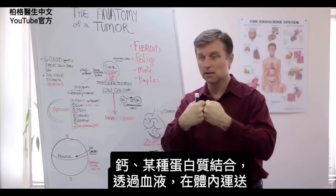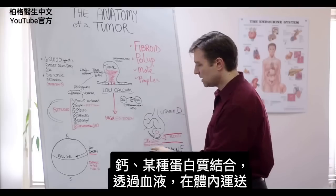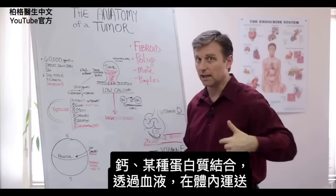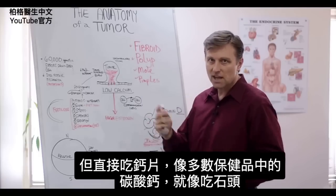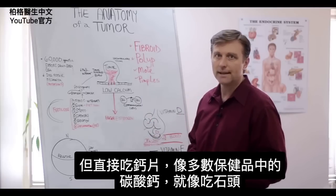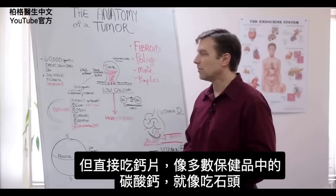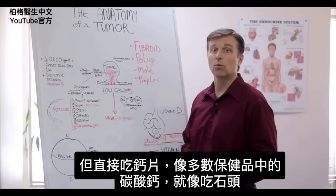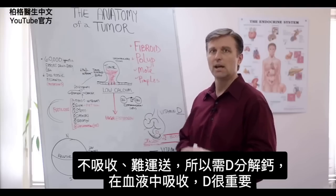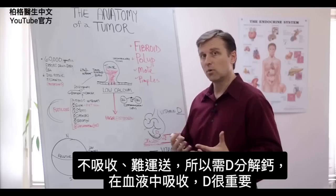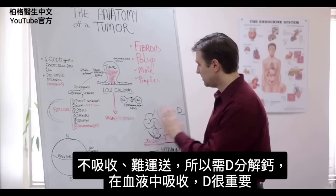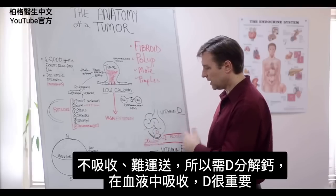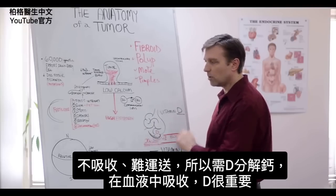The purpose is to get a lot more absorption into the small intestine so it can combine with a certain protein. Once it's connected to that protein, it can go through the blood and transport through the body. Straight calcium — like calcium carbonate in most supplements — doesn't really do anything. It's like eating a rock; it's hard to absorb and not transported. You need vitamin D to break it down and get it absorbed into the blood. Vitamin D is very, very important.